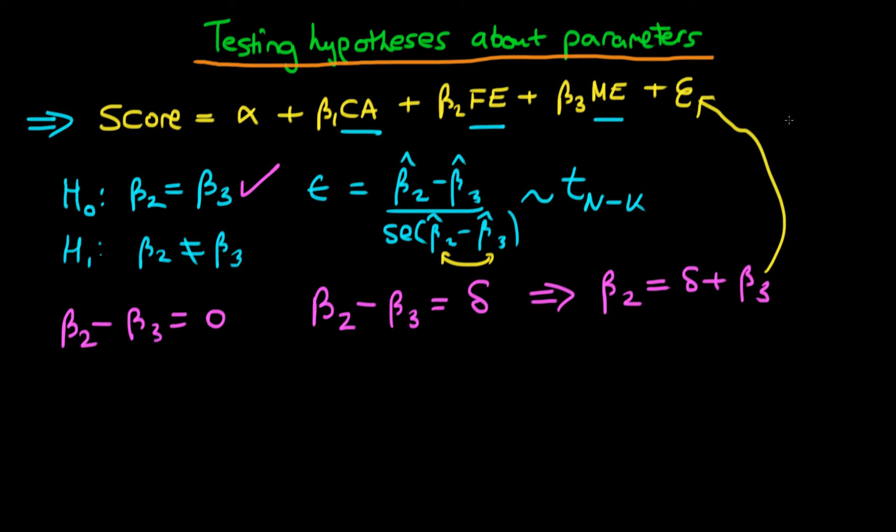All I'm going to do here is insert this into our above model. So if I insert this, we get that score equals alpha plus beta1 times class attendance—that bit doesn't change. And now we're substituting in for beta2, and in place of beta2 we just put delta plus beta3 times father's education plus beta3 times mother's education plus this error term.